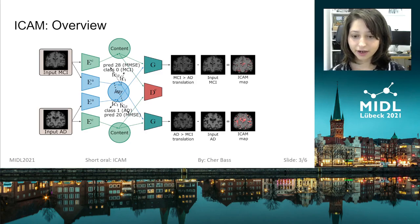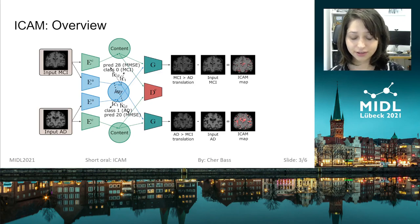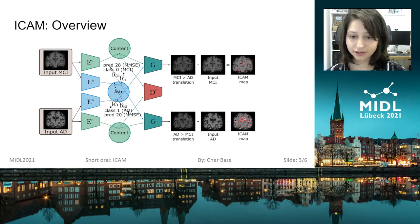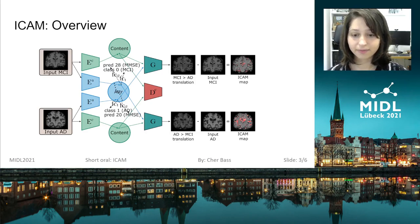After the encoding part, the attribute vector is swapped to achieve translation between AD and MCI. Then we get the feature attribution map by taking away the original input image, and you get this feature map. For more detail about our method, please check out our ICANN paper for further details.